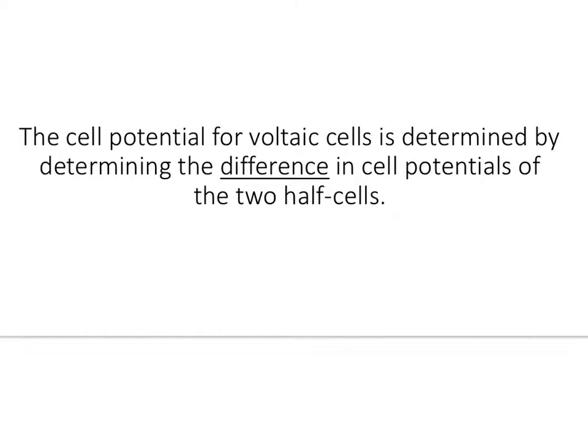All right. So the cell potential for voltaic cells is determined by determining the difference in cell potentials of the two half cells. Well, that should make sense. The overall cell potential is the difference between the anode and cathode.